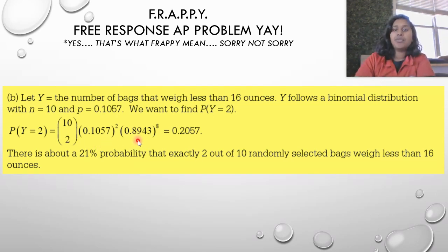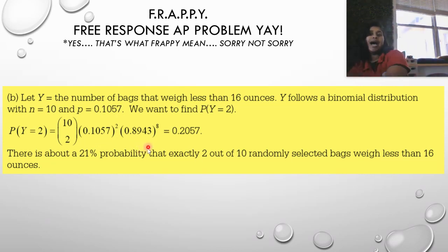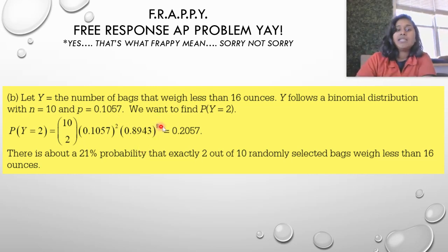This is the probability of my success. I raise it to the number of successes I want. Where did I get 0.1057? We just solved that for ourselves. Where did I get 0.8943? I subtracted this from one. You literally take the opposite. Your successes are 0.1057, so you take one minus 0.1057 and you get 0.8943, or the probability of your failure. That's the probability of getting 16 and higher, and I raise it to the number of failures, which would be 8.